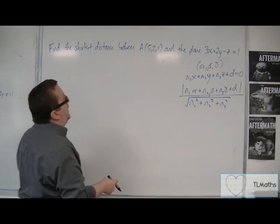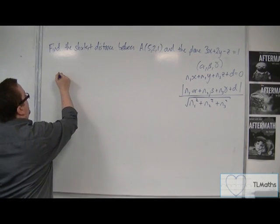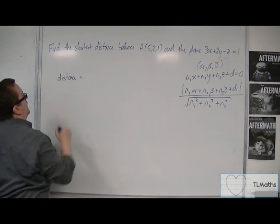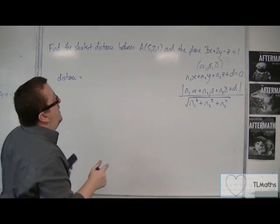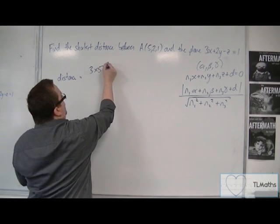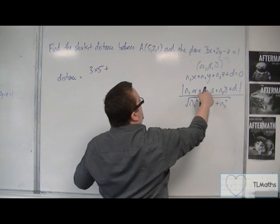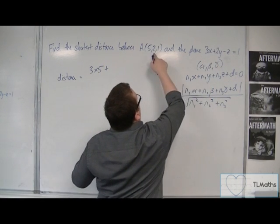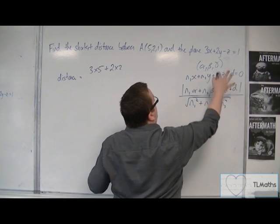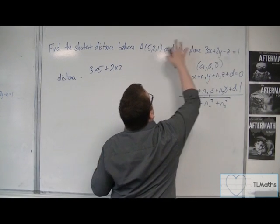So, let's check that. The shortest distance is n1 alpha, so that's 3 times 5, so 3 times 5 plus n2, which is 2 times 2, plus n3, so that's minus 1 times 1,